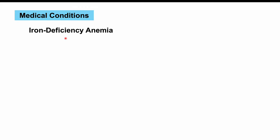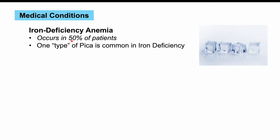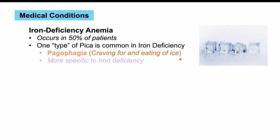Let's talk about medical conditions more likely to trigger pica. One is iron deficiency, especially iron deficiency anemia. Pica can occur in roughly half of patients with iron deficiency anemia. They're more likely to have a particular type called pagophagy — a craving for and eating of ice. It's been proposed that eating ice may help with blood flow into the brain. Pagophagy is more specific to iron deficiency.